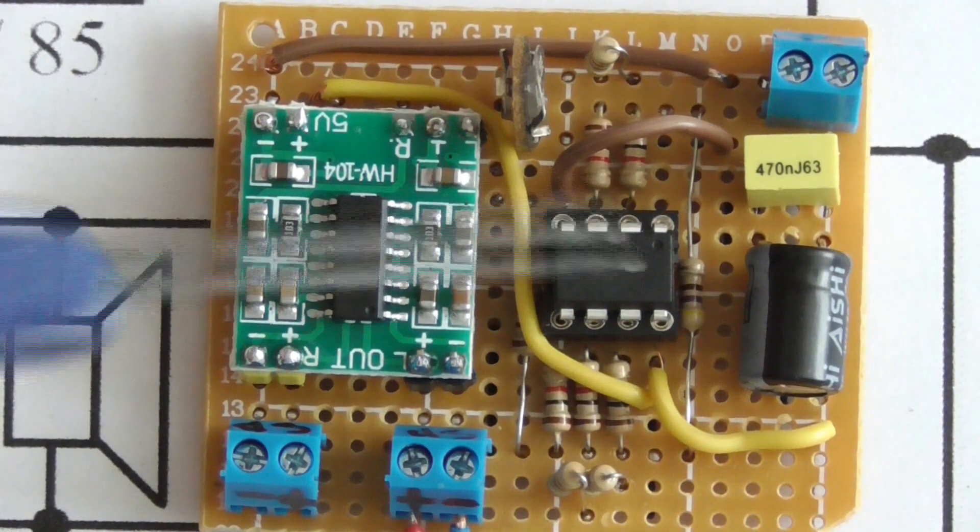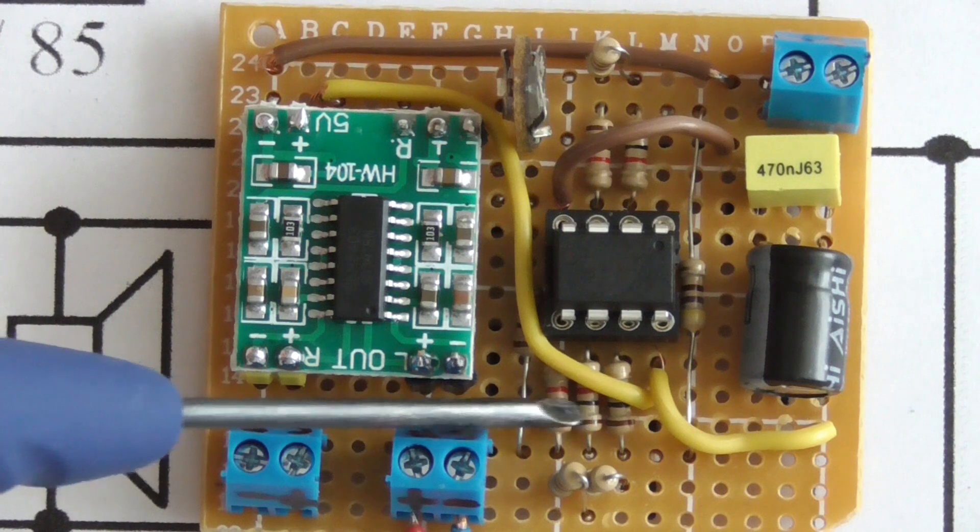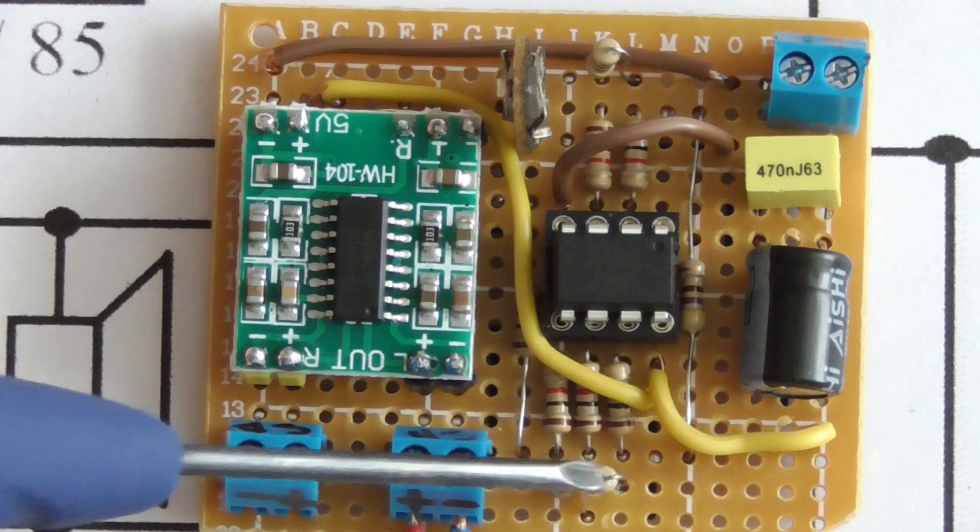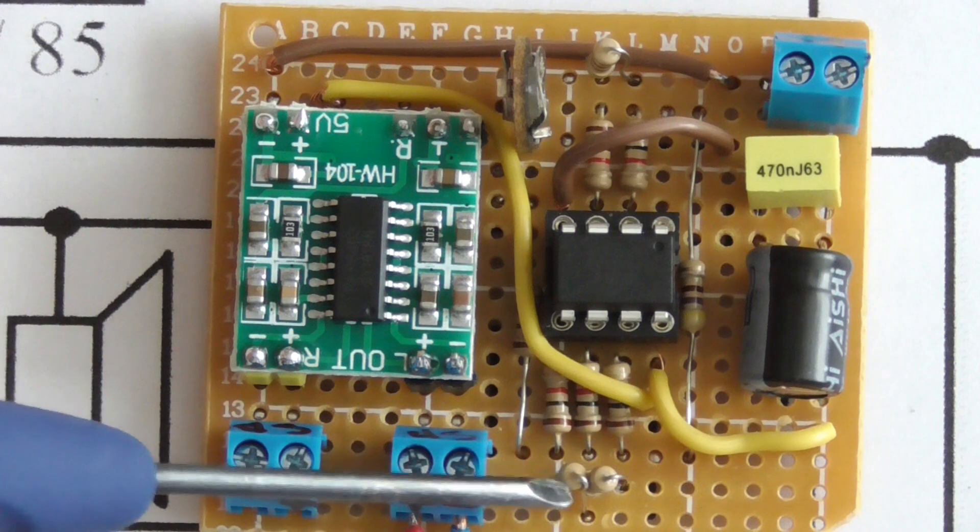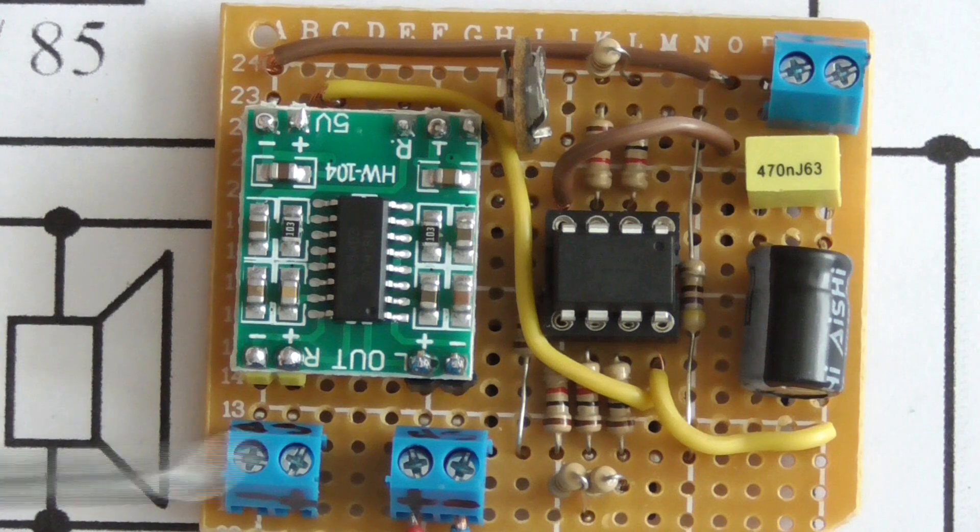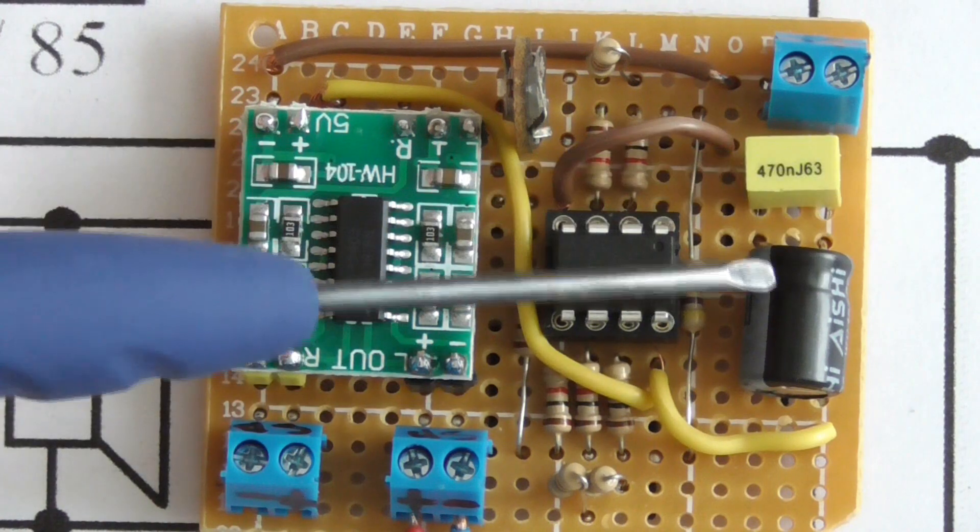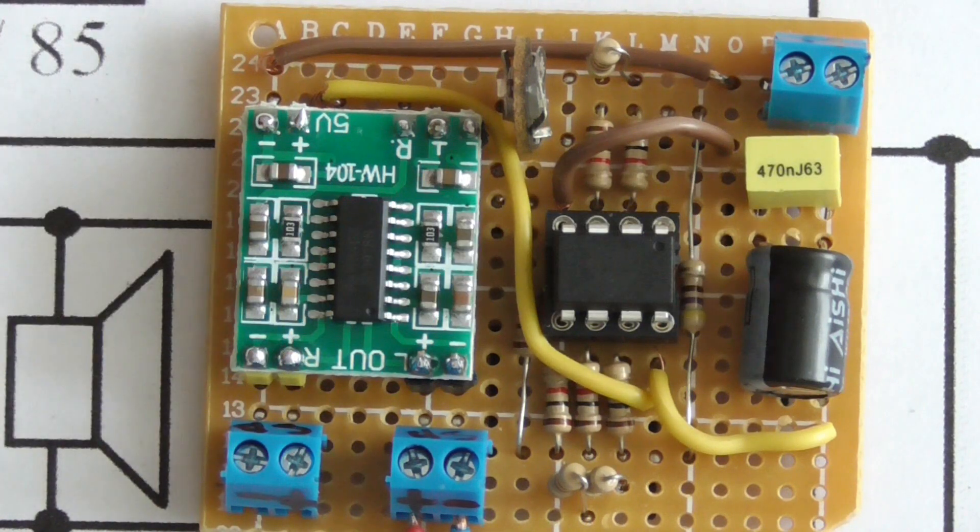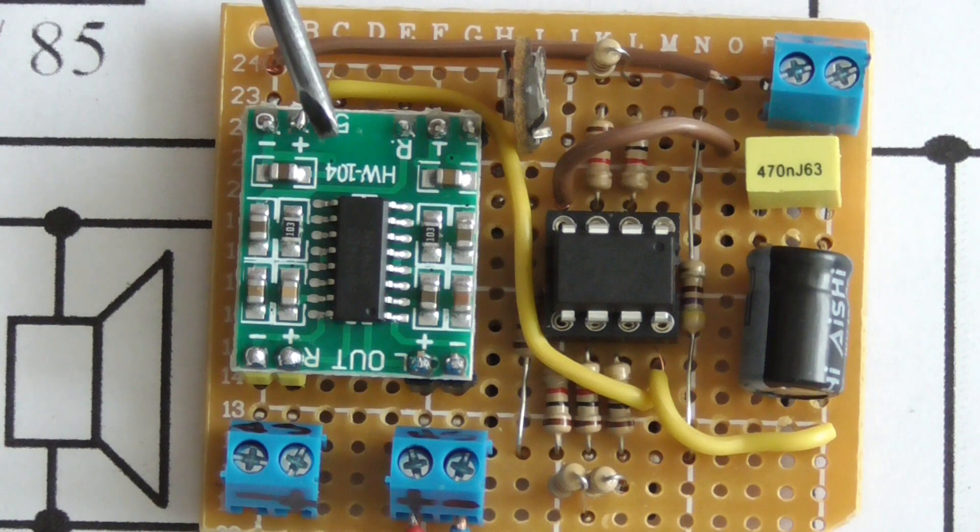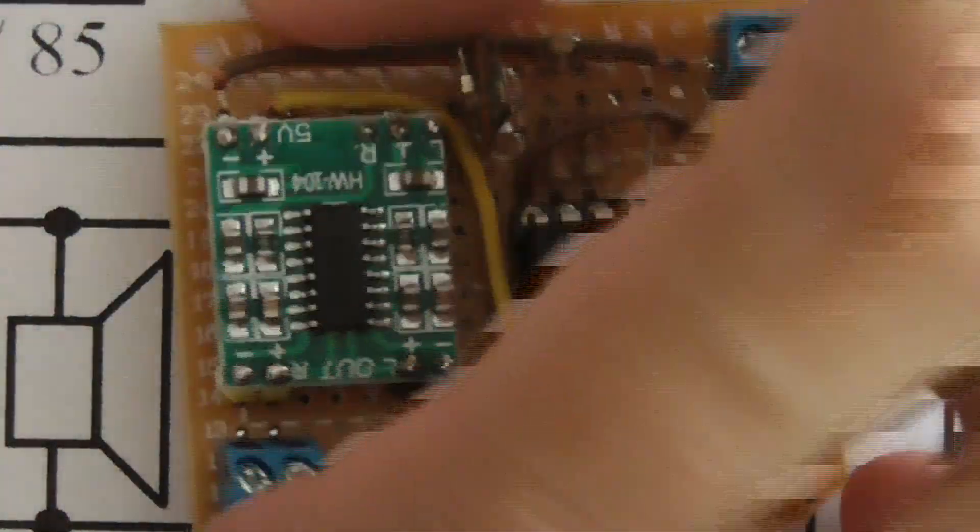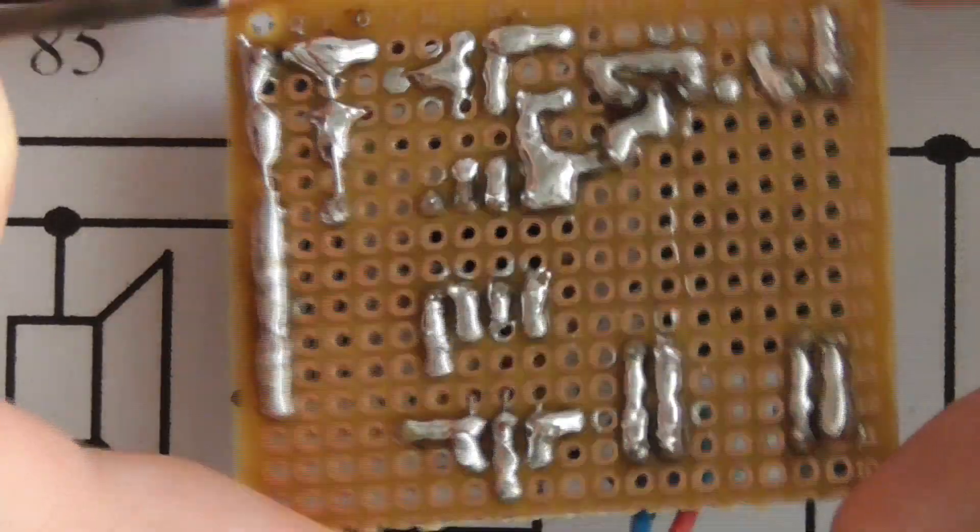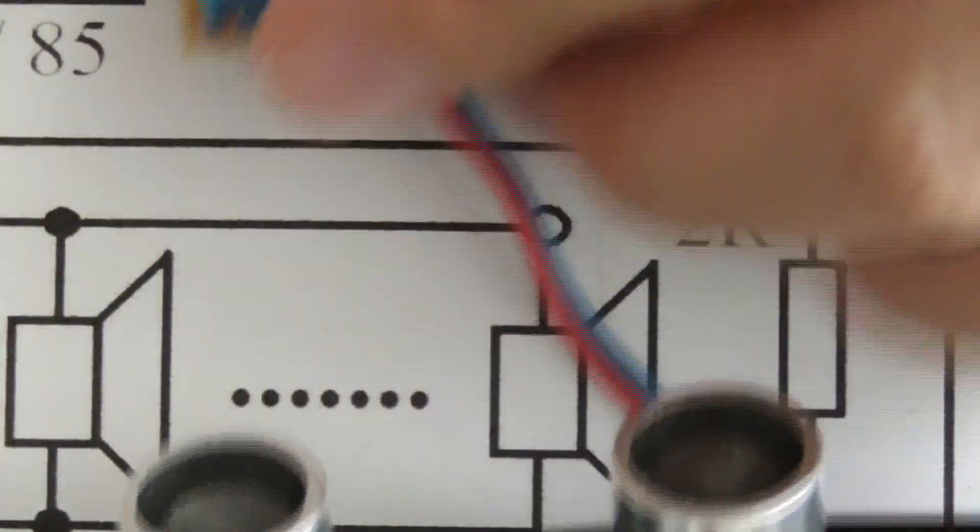We have one kilohm resistors, one, two, three, four, five, and we have 470 ohm resistors here, one, two, three, four, and some capacitors to block the power distortions. Power lines are connected to this power amplification module right here. From the other side, there's nothing interesting.